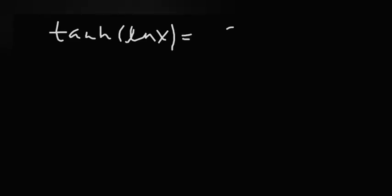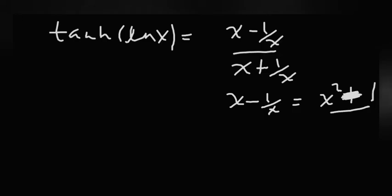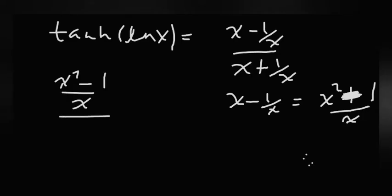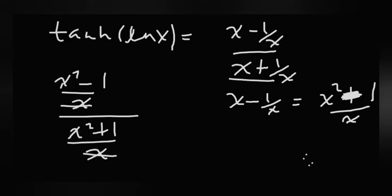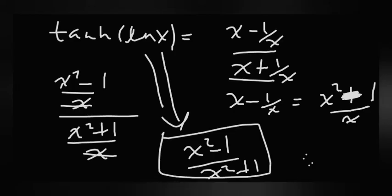So tanh(ln x) equals (x minus 1/x) over (x plus 1/x). Multiplying numerator and denominator by x gives (x squared minus 1) over (x squared plus 1). That completes part A.